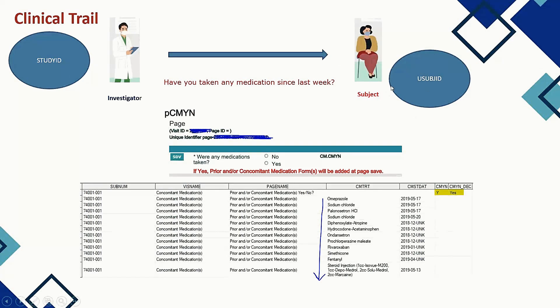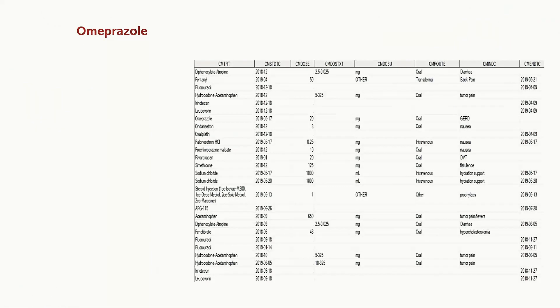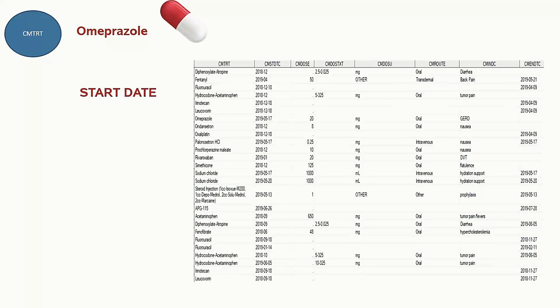The Study ID variable is mapped to the clinical trial study number, and the subject number is mapped to the variable called USUBJID. For example, if the subject is taking omeprazole as a concomitant medication — in capsule or tablet form — that information is captured in the variable called CMTRT, which stands for Concomitant Medication Treatment. When it was started is captured in CMSTDTC — that is the character version of the start date. CMSTDTC stands for concomitant medication start date in character version.